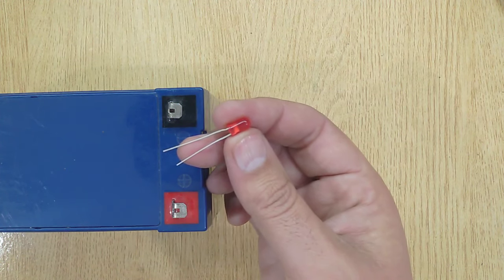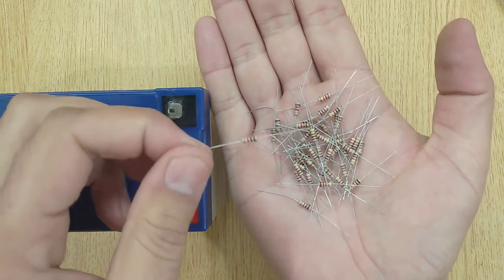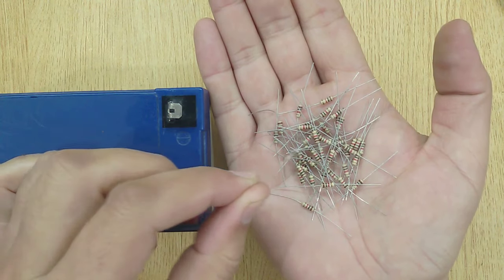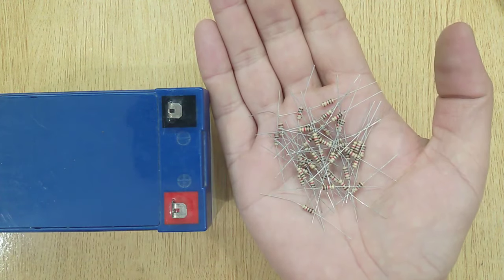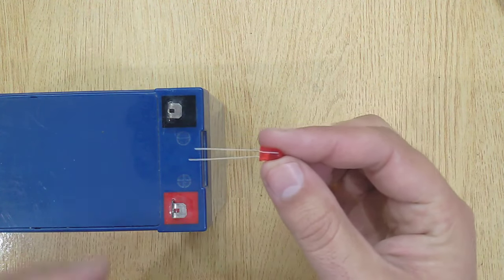To light up this 3-Volt LED on this 12-Volt Battery, we will use only one resistor. This is a 1k ohm resistor, we will use it for this purpose. This is another LED of the same kind.